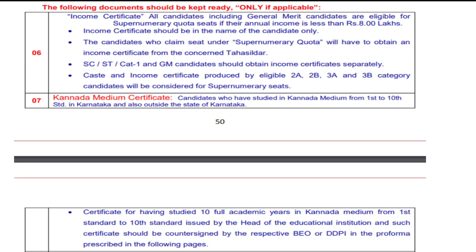Regarding caste certificates, there are three forms: Form D, Form E, and Form F. SC/ST candidates use Form D. Category 1 candidates use Form E. Candidates belonging to 2A, 2B, 3A, and 3B use Form F, which includes both income and caste details in one certificate. For Form F candidates, this single certificate covers everything. Based on your certificate, you can get Supernumerary Quota seats.